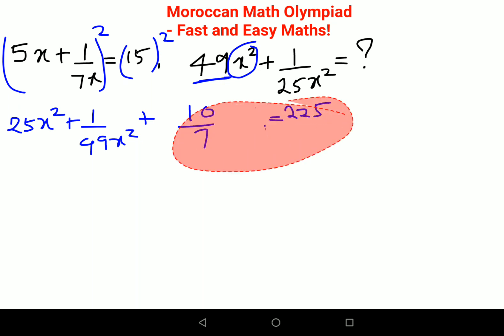So basically what we can do is now this comes out to be 225 minus 10 upon 7. Okay, so this then comes out to be 7 into 225 minus 10, which is 1575 minus 10, gets you 1565 upon 7.